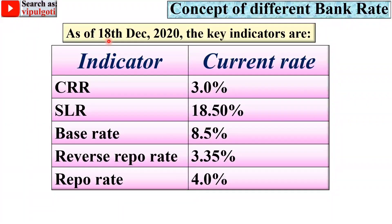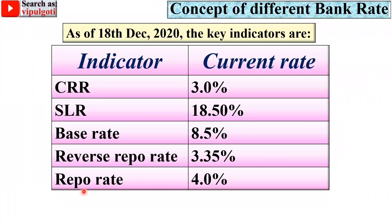As of 18th December 2020, the key indicators are: CRR at 3%, SLR at 18.50%, base rate at 8.5%, reverse repo rate at 3.35%, and repo rate at 4.0%.